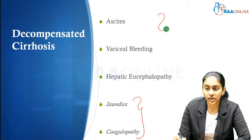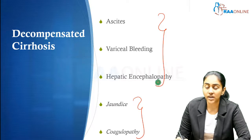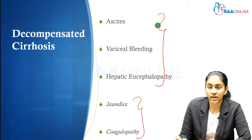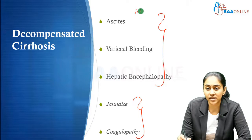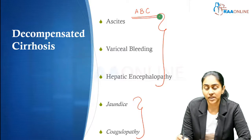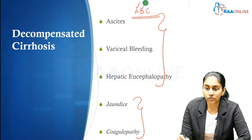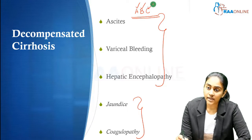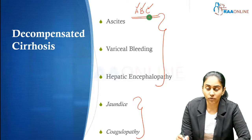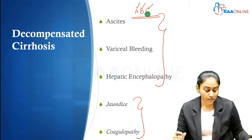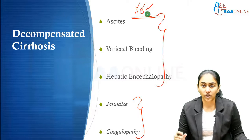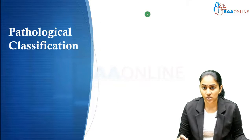To remember this: the presence of ascites, variceal bleeding, and hepatic encephalopathy makes up the ABC of decompensated cirrhosis — A for ascites, B for bleed (particularly variceal bleed), and C for coma or hepatic encephalopathy. This is what defines decompensated chronic liver disease.